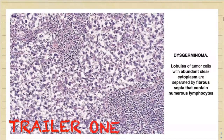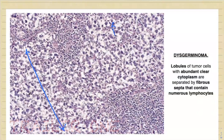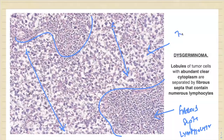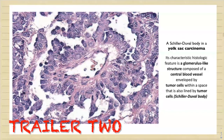Can you appreciate this diagram? Can you see these nests of clear cells — polygonal clear cells with abundant clear cytoplasm — and they are separated by fibrous septa containing numerous lymphocytes? This fibrous septa containing numerous lymphocytes and these tumor cells represent the classical dysgerminoma.